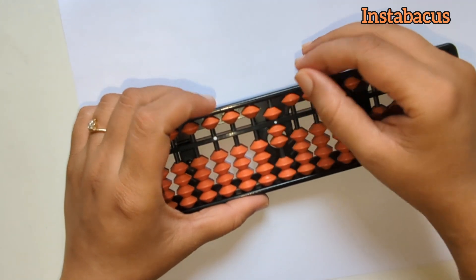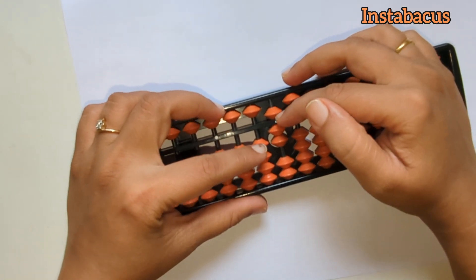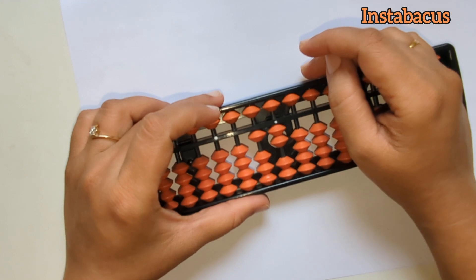Next one. This is seven on our abacus. We are going to add five to it in a very similar way, so it becomes twelve on our abacus.